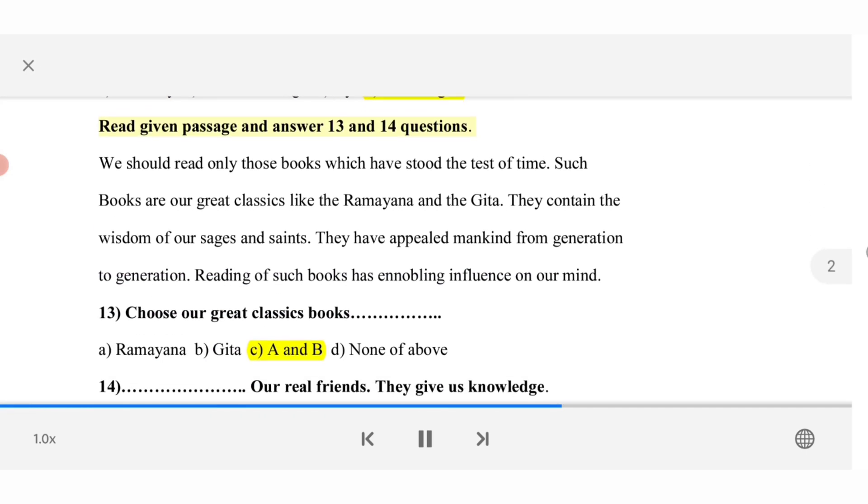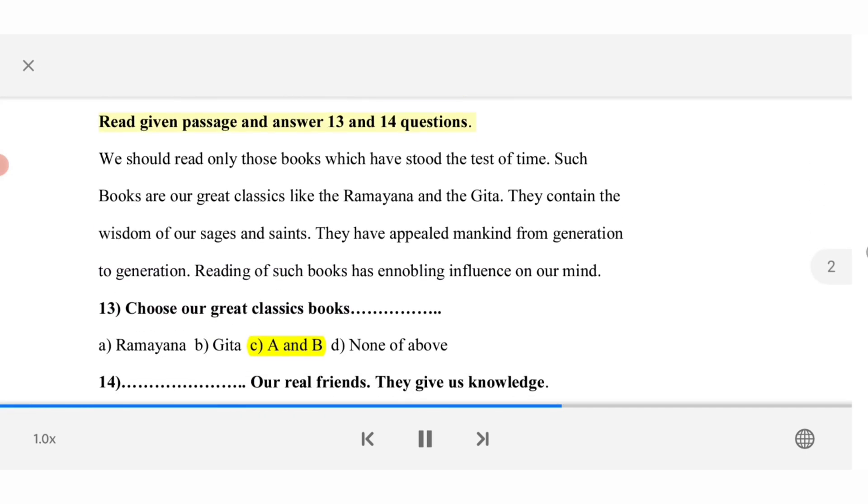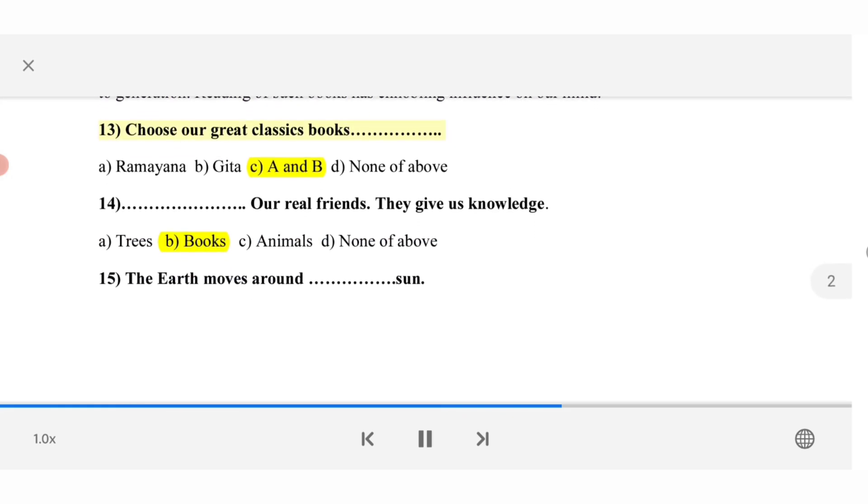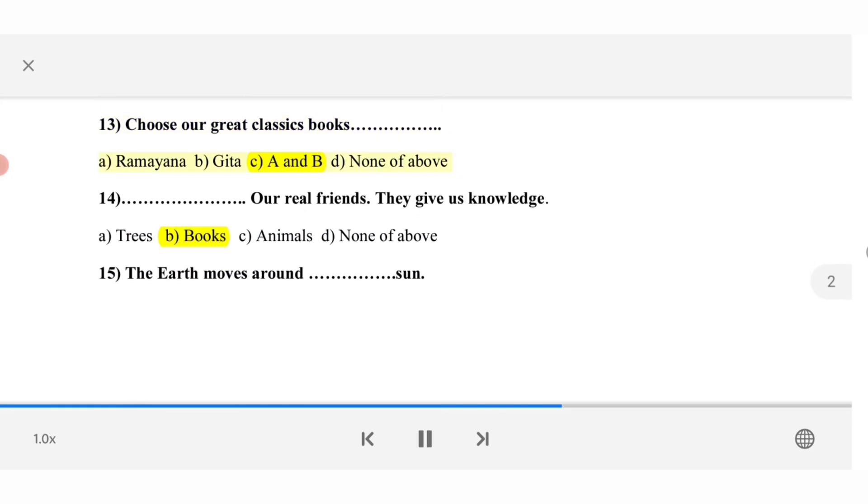Read given passage and answer 13 and 14 questions. We should read only those books which have stood the test of time. Such books are our great classics like the Ramayana and the Gita. They contain the wisdom of our sages and saints. They have appealed mankind from generation to generation. Reading of such books has enabling influence on our mind. 13. Choose our great classics books. A. Ramayana. B. Gita. C. A and B. D. None of above. 14. Our real friends. They give us knowledge. A. Trees. B. Books. C. Animals. D. None of above.